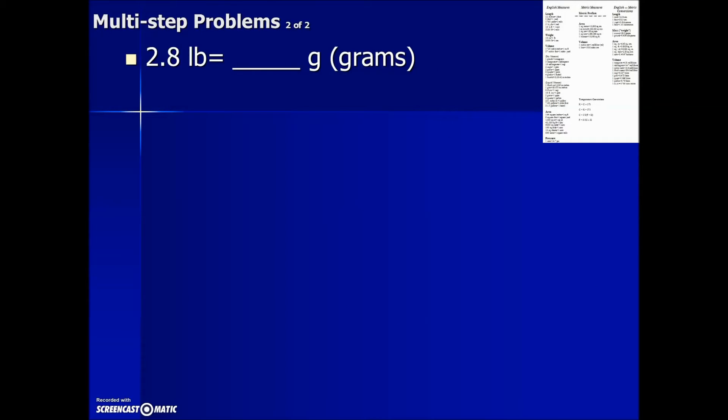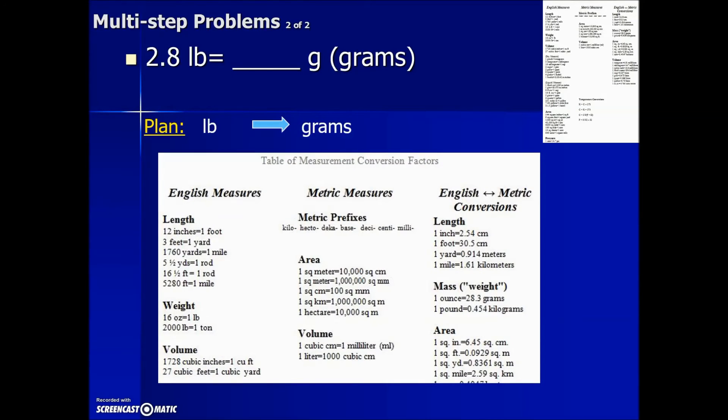In this next problem we're given 2.8 pounds and asked to convert it into grams. The plan is pounds to grams. When we look at our conversion table, these two values aren't in the same unit of measurement. We have 16 ounces is equal to 1 pound, and we have to jump over here: ounces to grams.